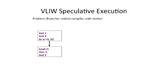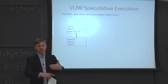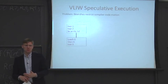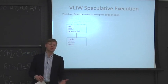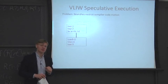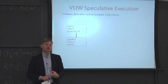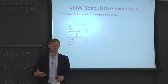Our first technique for instruction-level parallelism in VLIW: the challenge is that branches restrict the forms of code motion the compiler can do. Moving an add before a branch is easy. But what about an instruction that can take a fault or interrupt? Loads are a good example — a load can take a page fault or try to access a value not mapped by the operating system.